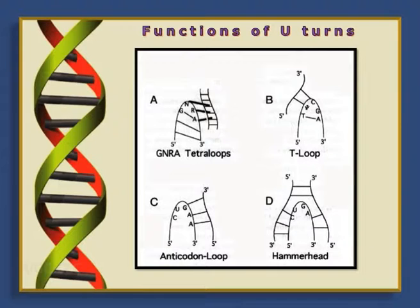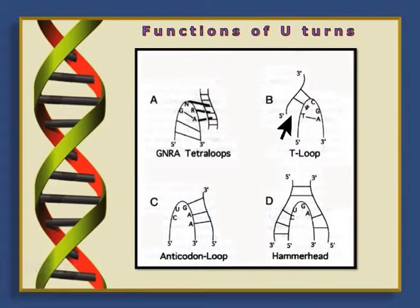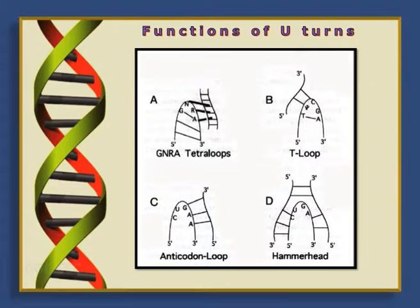The U-turn motif plays an important role in giving a bend to the RNA backbone, changing the direction of the RNA backbone, and providing a scaffold for promoting the tertiary structure of RNA. U-turns are found in the T-loop and anticodon loop of tRNA, and in the hammerhead ribozyme. The nucleotides on the 5-prime side of the T-loop base-pair with bases in the D-loop, while the nucleotides on the 3-prime side of the anticodon base-pair with bases in the mRNA, stabilizing these interactions and enabling tRNA's physiological function.